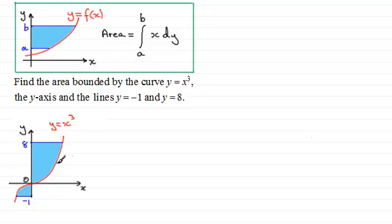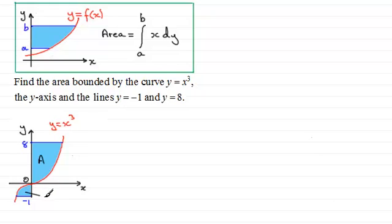Now, notice that some of this area is on the right-hand side of the y-axis and the other part is on the left-hand side. When this happens, the parts on the right always come out as positive when we apply this method, but the ones on the left would always come out negative — similar to questions where area below the x-axis comes out negative. So we need to split this up into two integrals: area A on the right-hand side, and area B on the left, which is the more awkward one.